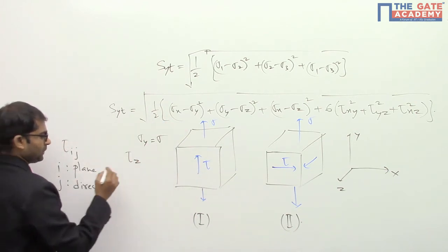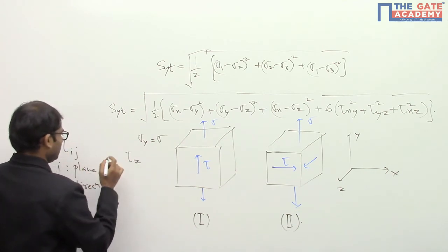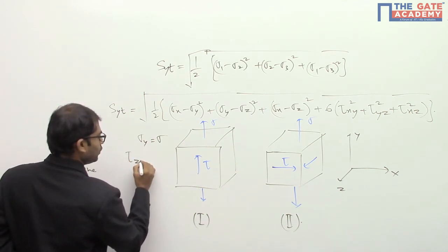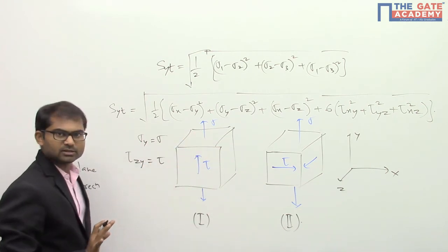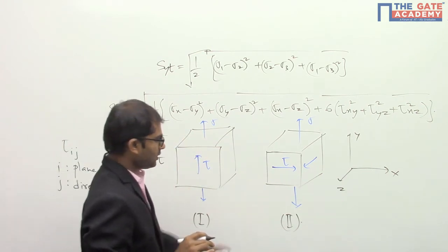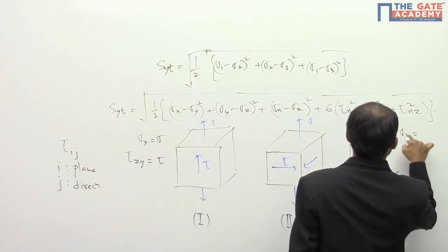So z will come, but it is acting along the y direction, so j is actually y here. So you have tau_zy equal to tau, remaining all other parameters are zero. In the same way, if you write down for the second case, this is sigma_y.